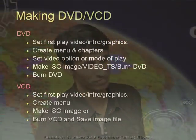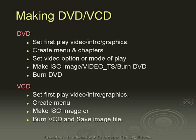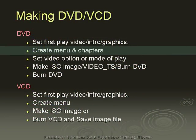Now, come to making DVD and VCD. After rendering, we have the MPEG-2 file, MPEG-1 file, and WMV file. Then we have to make the DVD or VCD. Suppose you want to make a DVD — first, set auto play, video intro, and graphics. If you have intro information about your company, set the first-play option to auto play so it starts automatically when you insert the disc. Then create menus and chapters.